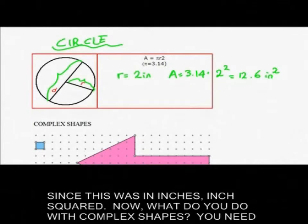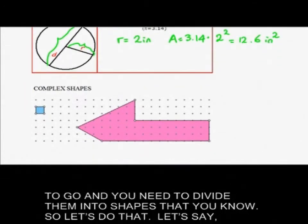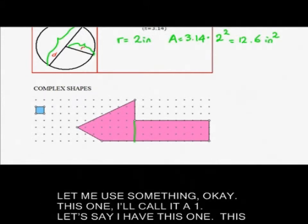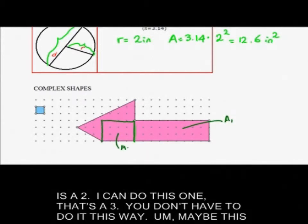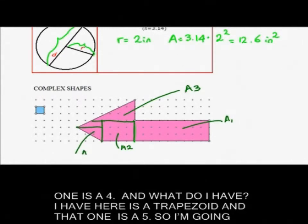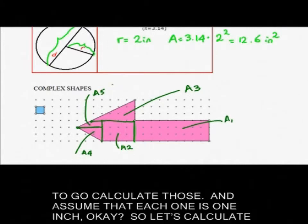Now what do you do with complex shapes? You need to divide them into shapes that you know. So let's do that. This one I'll call it A1. Let's say I have this one, this is A2. I can do this one, that's A3. Maybe this one is A4. And I have here is a trapezoid and that one is A5. So I'm going to go calculate those and assume that each one is one inch.